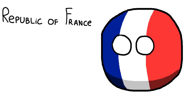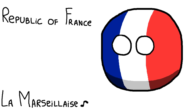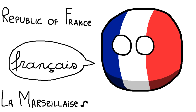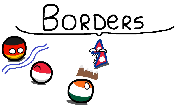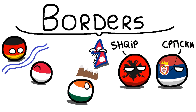Countries are able to identify themselves by having a specific name, flag, anthem, or language. But what this video is about is the border. The border of a country might exist because of a natural barrier, like rivers or mountains. Other times the border is drawn on a line where people speak different languages or follow different religions.